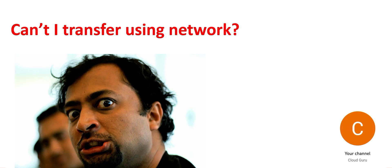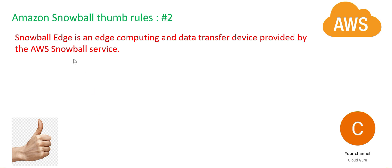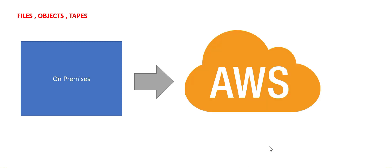This box — the Snowball — can be storage optimized, compute optimized, or GPU optimized. In recent times, Snowball is now called Snowball Edge, and it is an edge computing and data transfer device. Please remember: edge. We have different flavors like storage optimized, compute optimized, and GPU optimized. Suppose you have your on-premises with a lot of files and tapes and you need to move them to AWS — Snowball is very useful here.